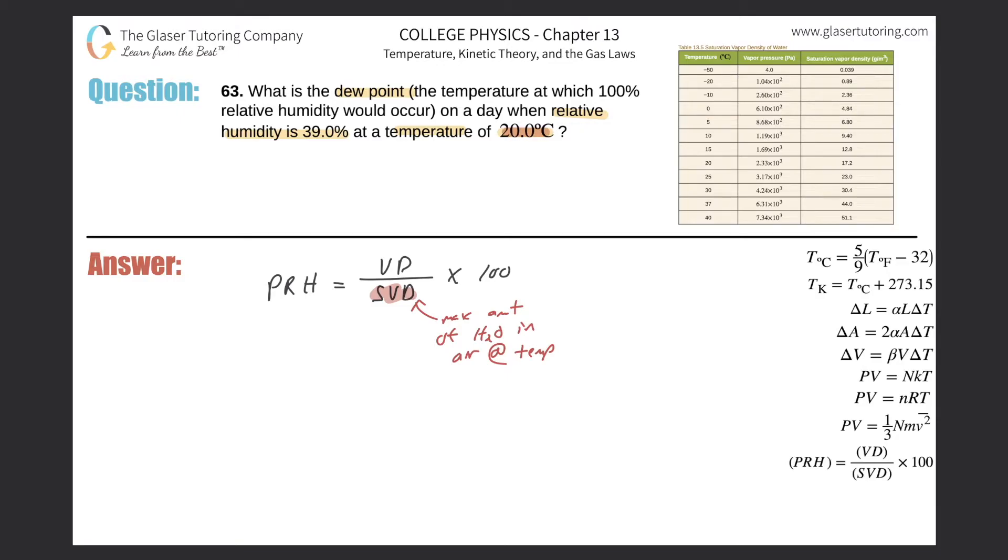They told us the temperature here is going to be 20 degrees Celsius, so we go to the table, we find 20 degrees Celsius and we scroll on over to the right where it tells us the saturation vapor density. That's in grams per cubic meter. There's no problem with those units here because all these formulas are basically ratios.